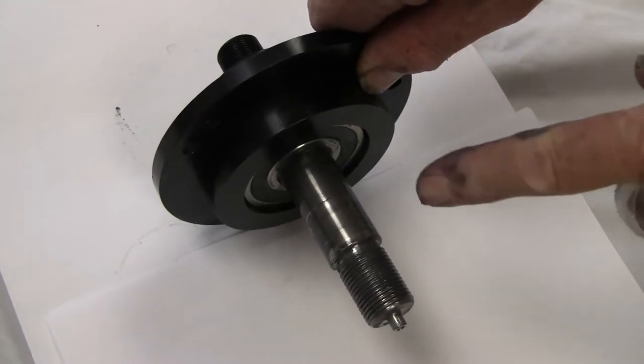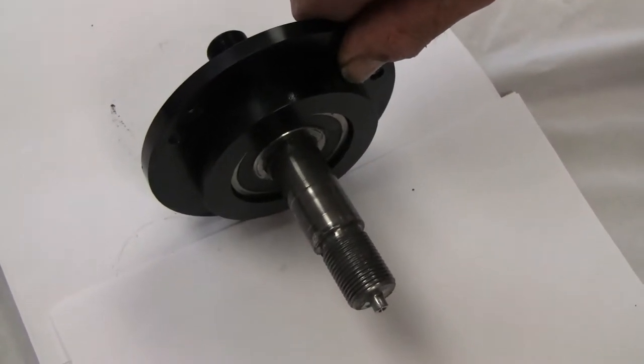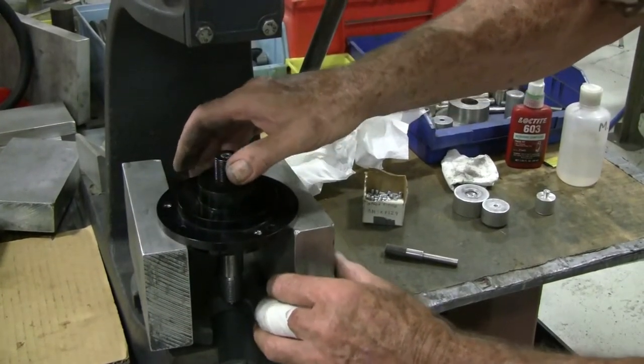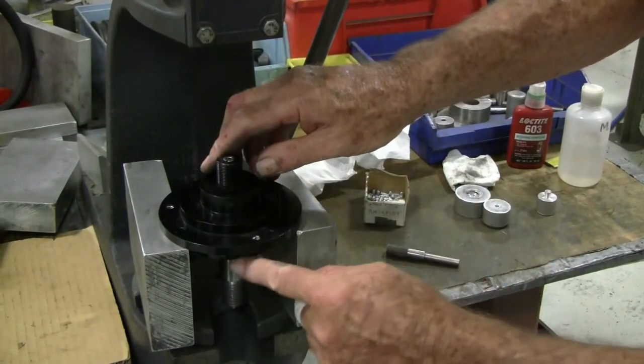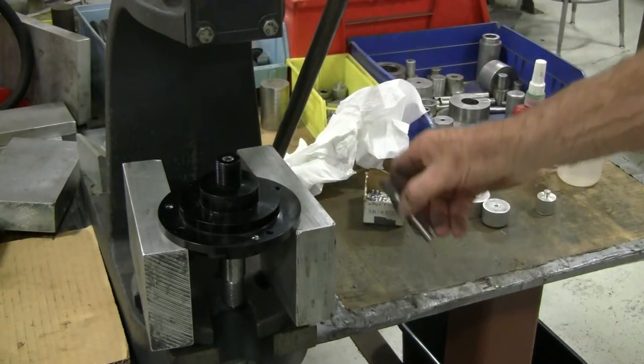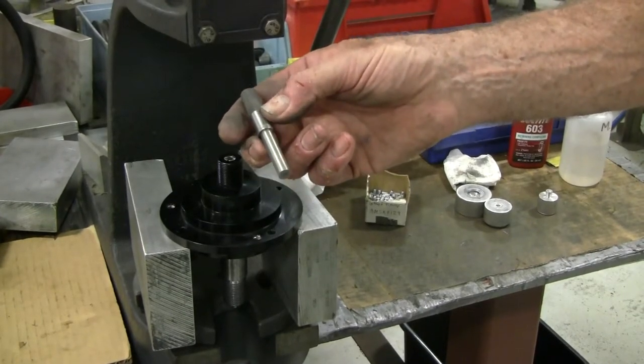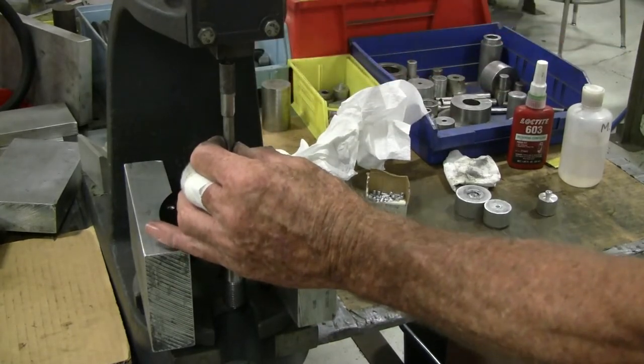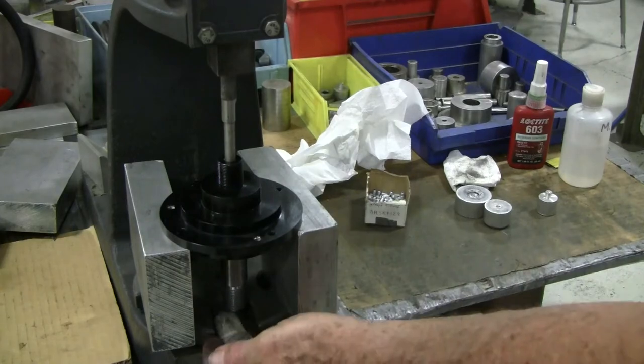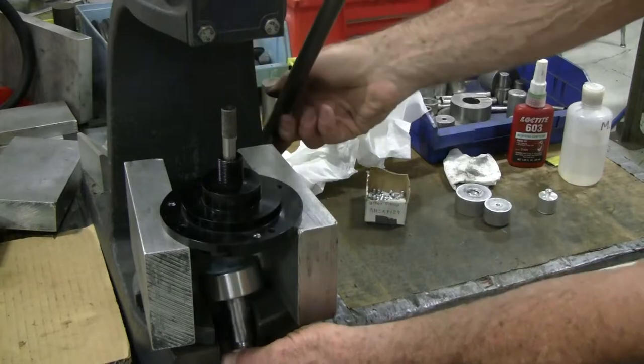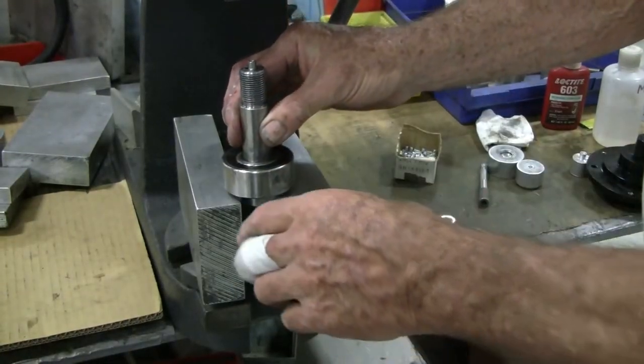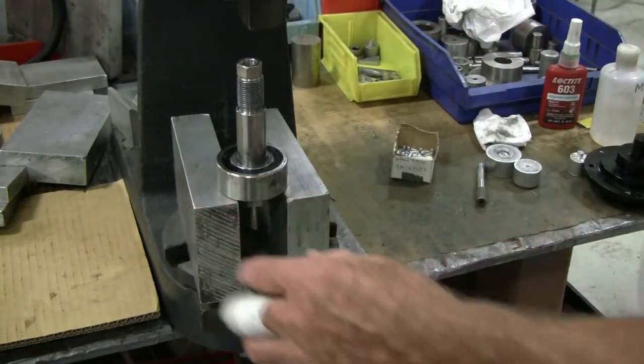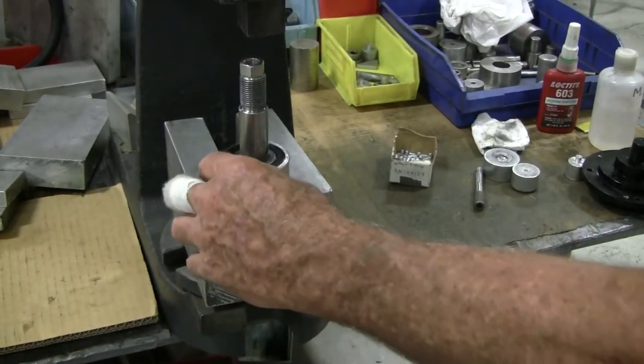You will now need to remove the shaft with the bearing from the hub. You will usually need a press to remove and reinstall the bearing in the shaft. Set up your press to allow pressing the shaft and the bearing out through the bottom of the hub. Get a punch of smaller diameter than the shaft and press the shaft out. Protect the small threaded end of the shaft by putting a nut over it to press on. Now press the shaft out of the bearing.